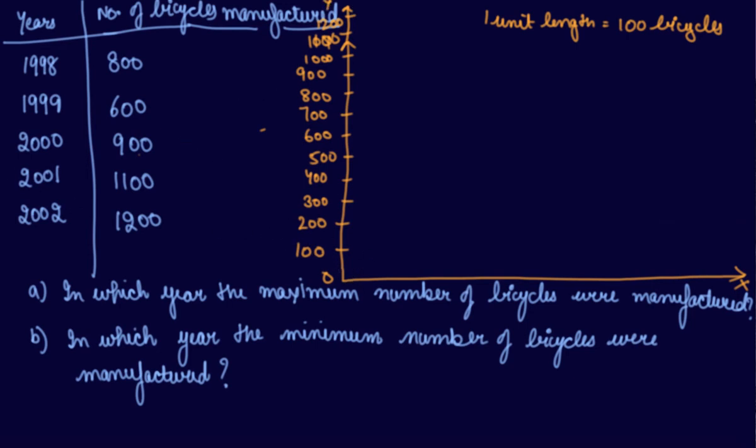Now we have to take the number of years. Let's take number 1 year. Then a gap, number 2 year. Then a gap, 3 years. Then a gap, 4th year. Then a gap, 5th year. Same year gap we have to take.